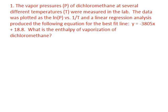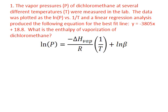In this first problem you were asked to find the enthalpy of vaporization of dichloromethane given the best fit line for a plot of the natural log of vapor pressure versus the inverse of temperature. The best fit line fits the linear form of the Clausius-Clapeyron equation where y equals mx plus b.